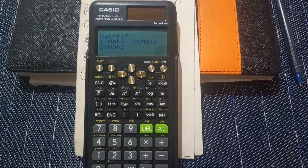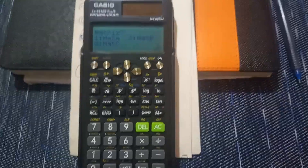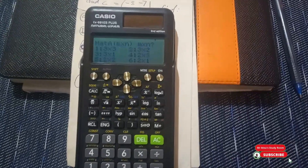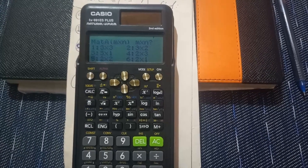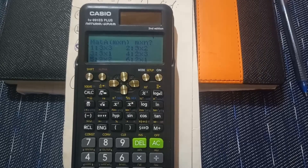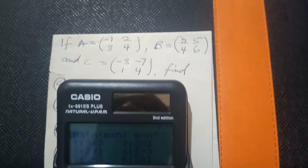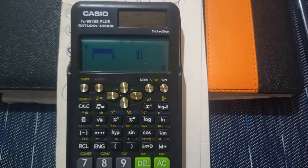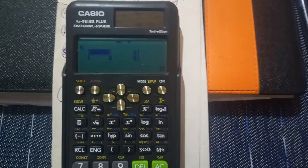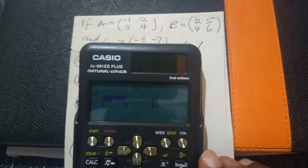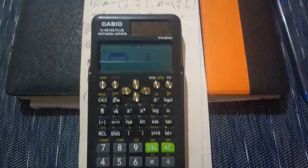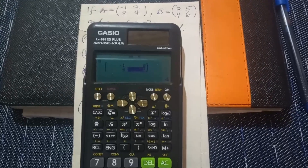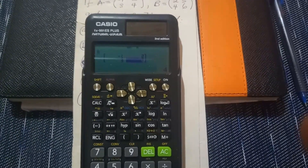It will ask you where you want to enter the data. We have matrix A, matrix B, and matrix C. We want to enter matrix A first, so select number 1. It will ask for the matrix dimension — matrix A is 2 by 2, which is number 5. The cursor starts at row 1, column 1. Enter negative 1, press equals, then 2, 3, and 4 — pressing equals after each entry. Matrix A is now entered.